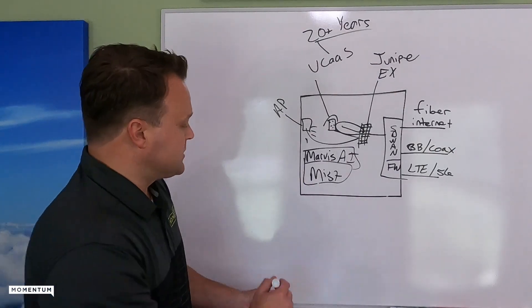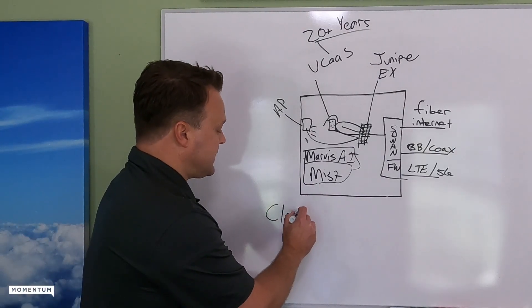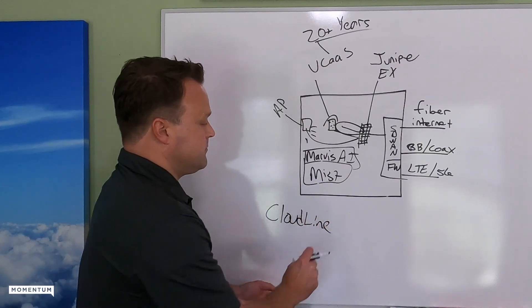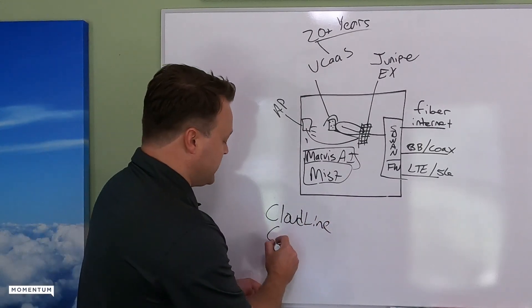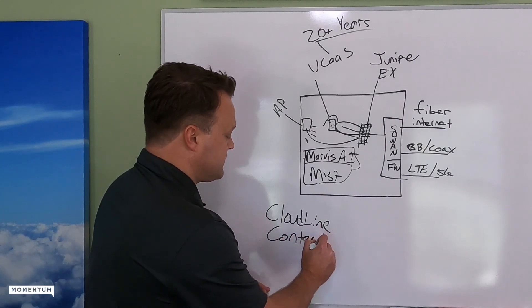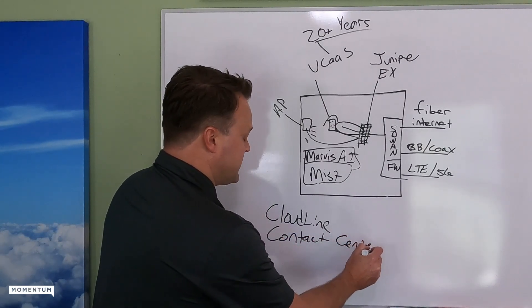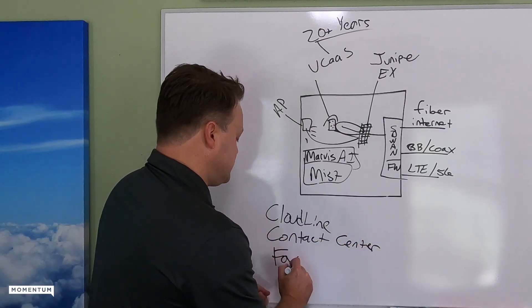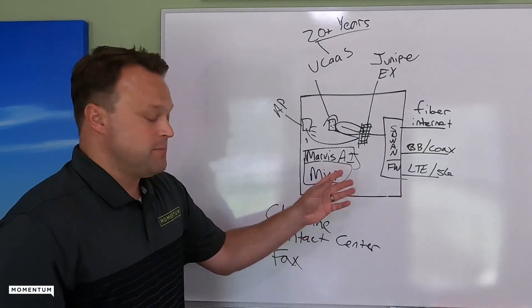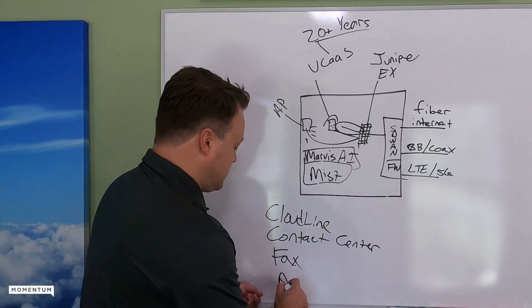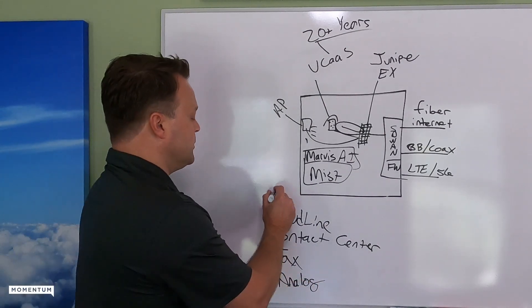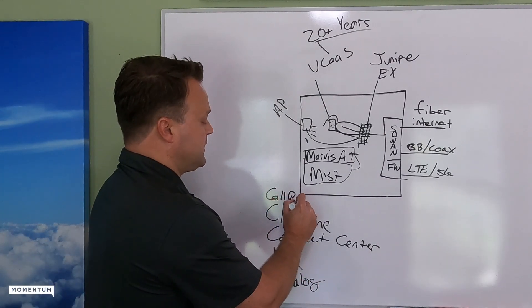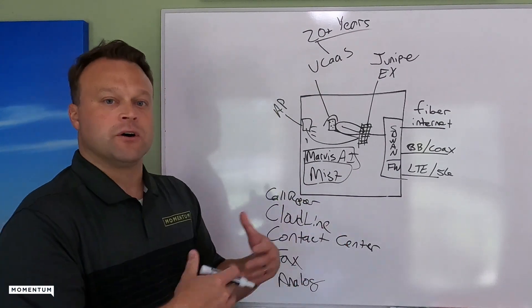And of course, as we go deeper, we can start talking about our cloud line offering for elevator and POTS line type replacements. We can get into contact center type solutions. We can get into vaccine type solutions, depending on the building, analog type offerings, complex call flow, call reporting, call recording. So you can go on and on and on.